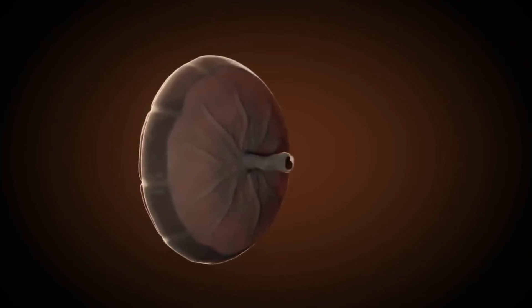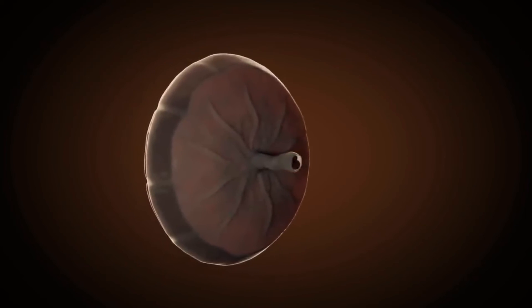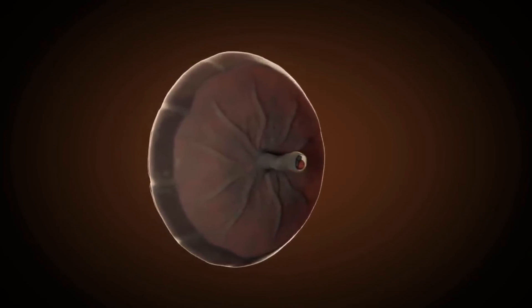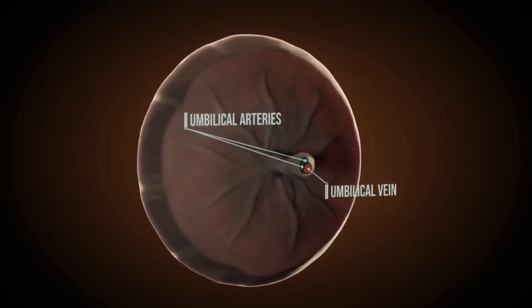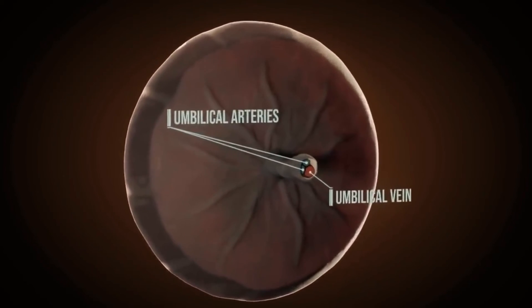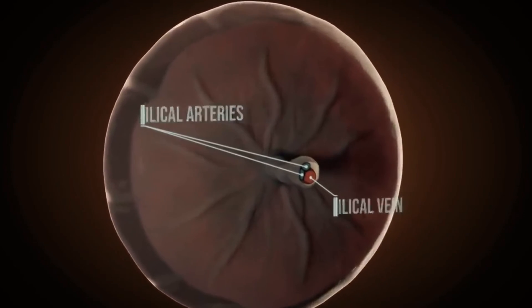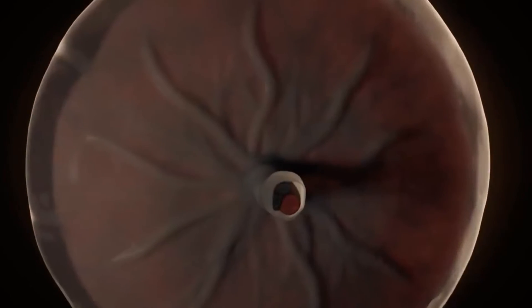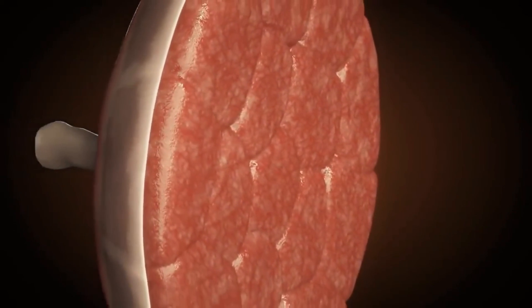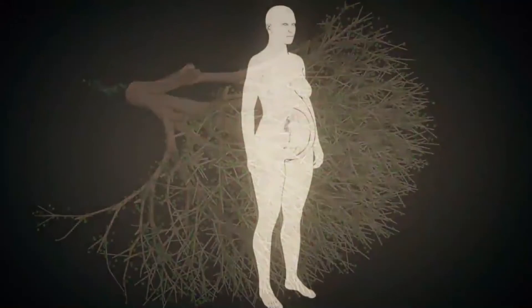Since the fetus possesses both the DNA of the mother and of the father, the blood of the fetus must not mix with the blood of the mother. The placenta is responsible for this, as it manages the exchange of substances between mother and fetus.